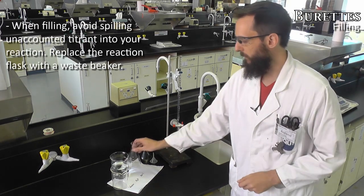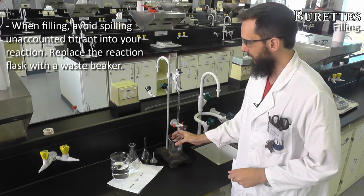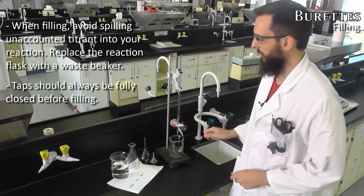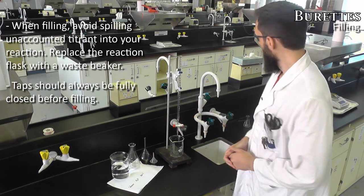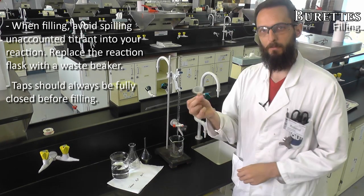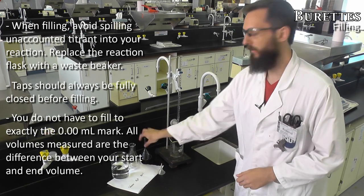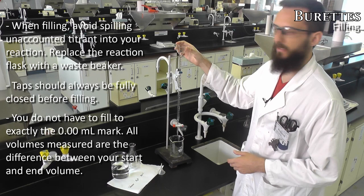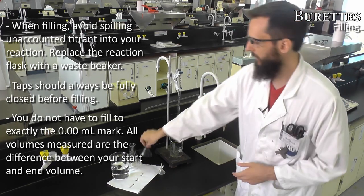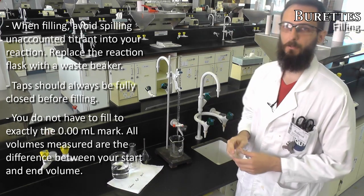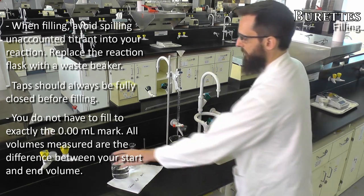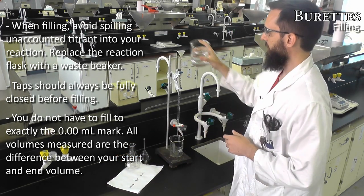When we want to fill our burette it's important to first take away any reaction underneath just in case we have any spills. So I'll remove that and put a waste beaker in there instead. The next thing I need to check is that my valve is closed. Then we will use a small plastic funnel. If I was to use the glass funnel you'll see that putting that in it's quite a snug fit. It rattles a little bit but not much, and when you start filling towards the top you'll very easily get spills. So I'd recommend using these smaller funnels. Stick that into the top and then you can begin to fill.